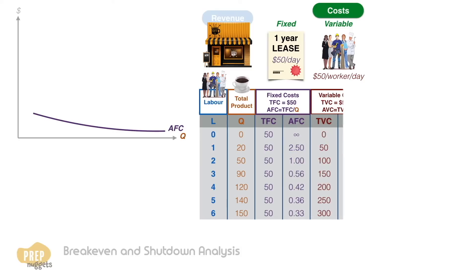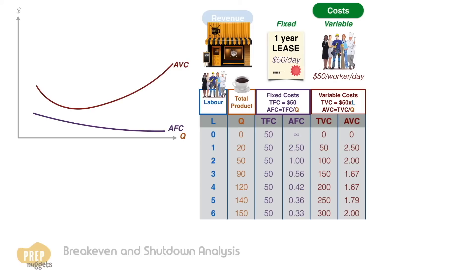Let's say you pay each worker $50 a day. These are the total variable costs, and if we divide them by the number of coffees served, we get the average variable cost for each cup of coffee. Plot it down and we get a curve that looks like this, because of diminishing marginal productivity of labor — the average variable cost starts increasing after a certain point.